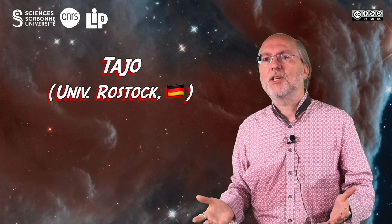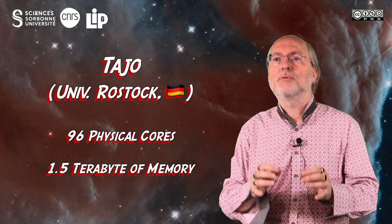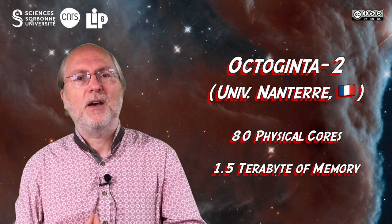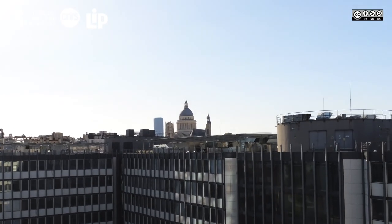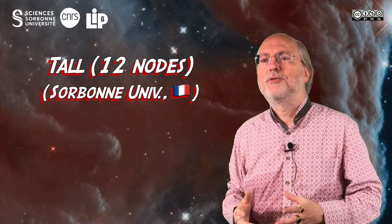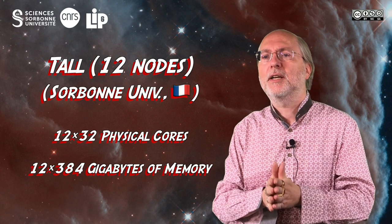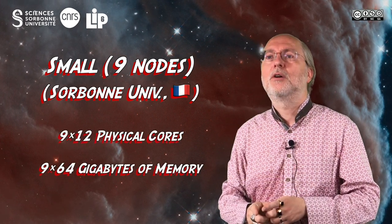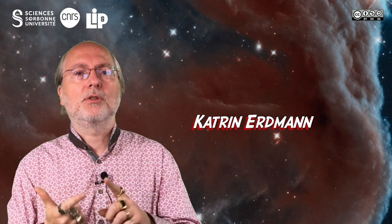To operate tools for the model checking contest, we need large computers. A network of colleagues helps us by lending their machines for exclusive use approximately four weeks. The first machine is Tajo from Rostock University, embedding 96 physical cores and 1.5 terabytes of memory. Then we have Orthoginta 2, an 80 physical core machine with 1.5 terabytes of memory, loaned by Université de Montpellier. LIP6 at Sorbonne Université provided two machines: 12 nodes of tall, each with 32 physical cores and 384 gigabytes of memory, and up to 9 nodes of small, each with 12 physical cores and 64 gigabytes of memory. These machines were operated by system engineers Catherine Hermann in Rostock, Fabrice Le Grand-Brie in Nanterre, and Pierre-Emmanuel Leroux and Benoit Gaillat at Sorbonne University.